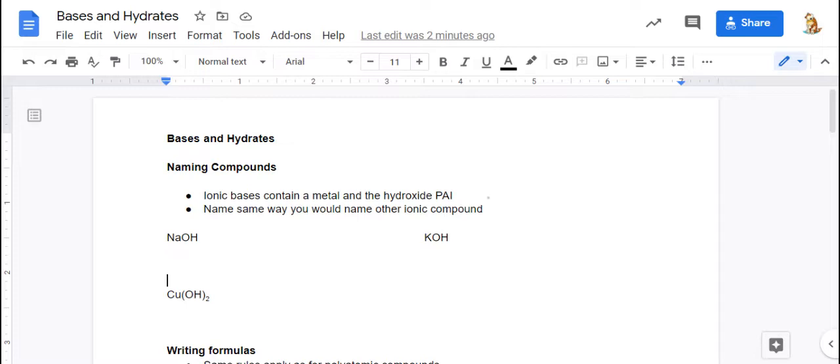So naming compounds. Ionic bases contain a metal and the hydroxide polyatomic ion, OH one negative. You're going to name them the same way you would do any other ionic compounds.